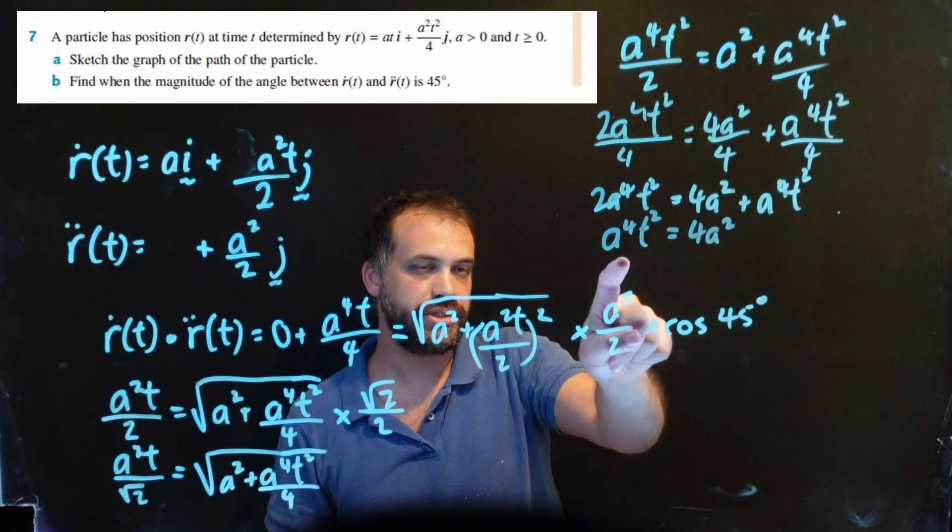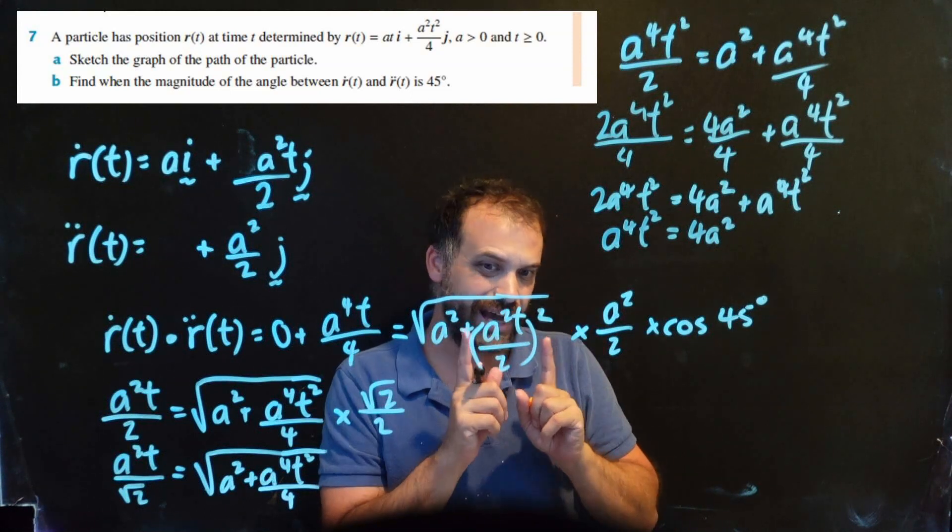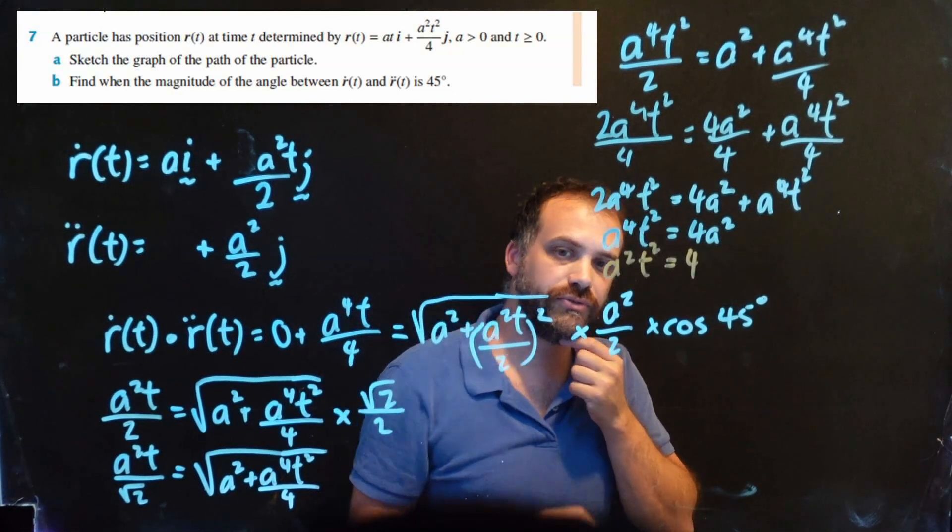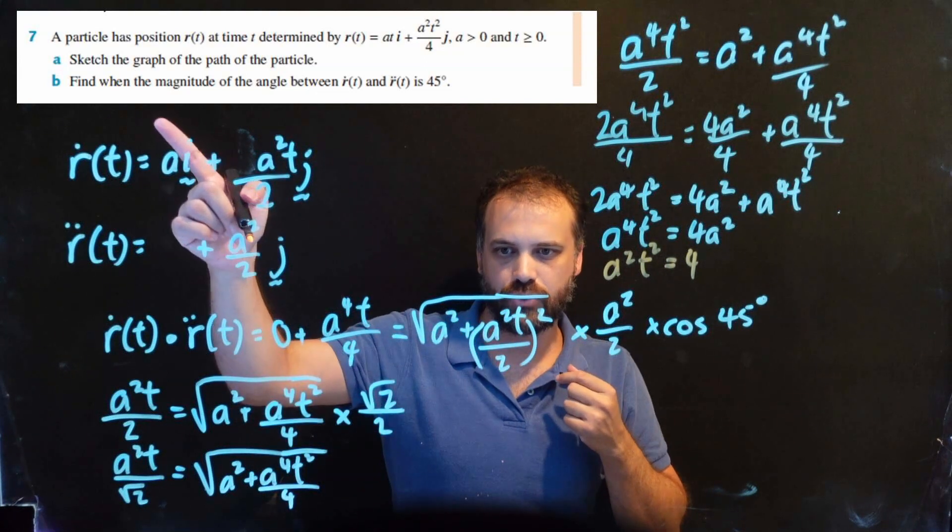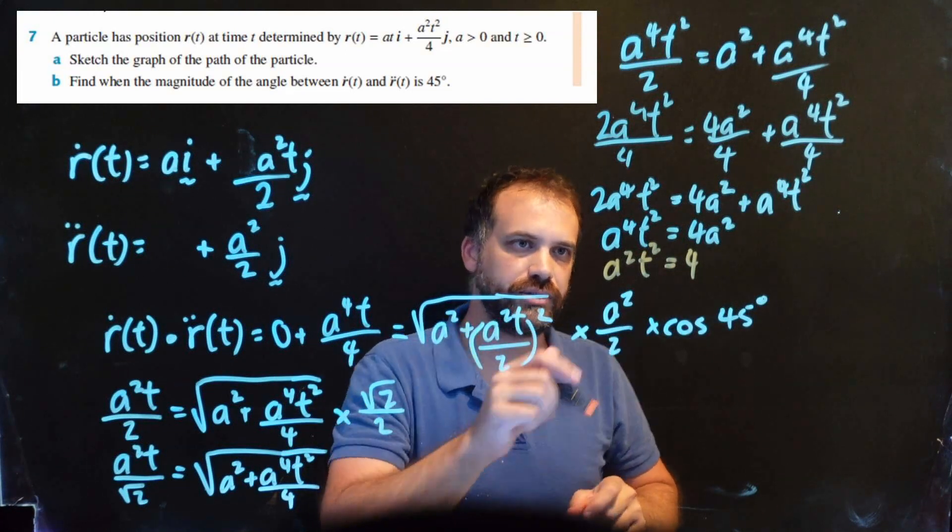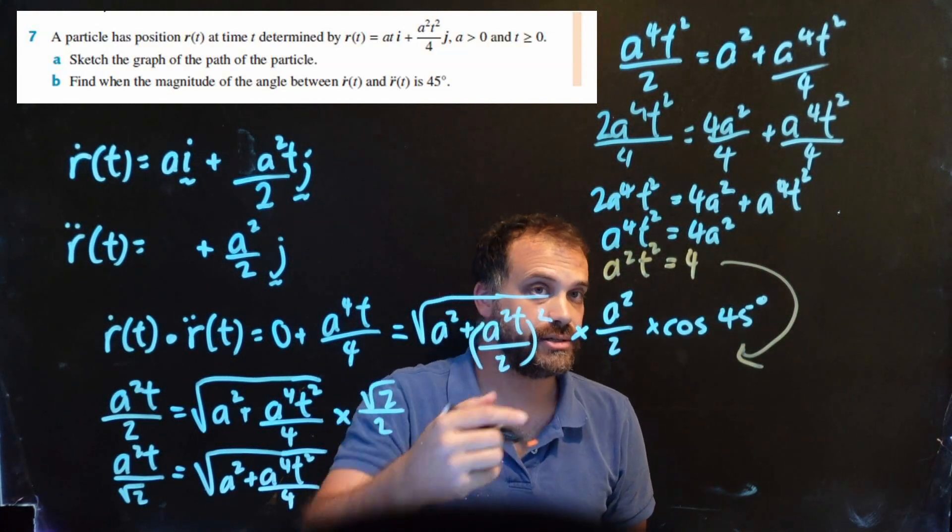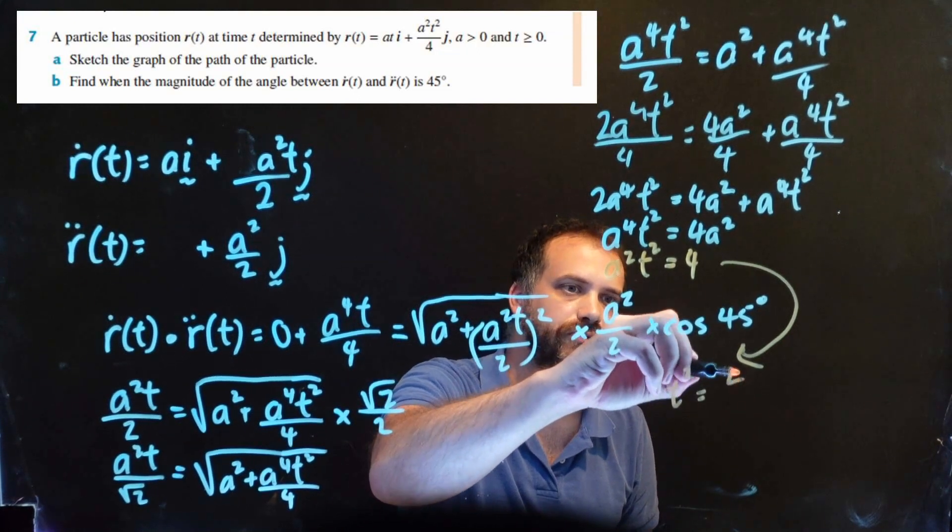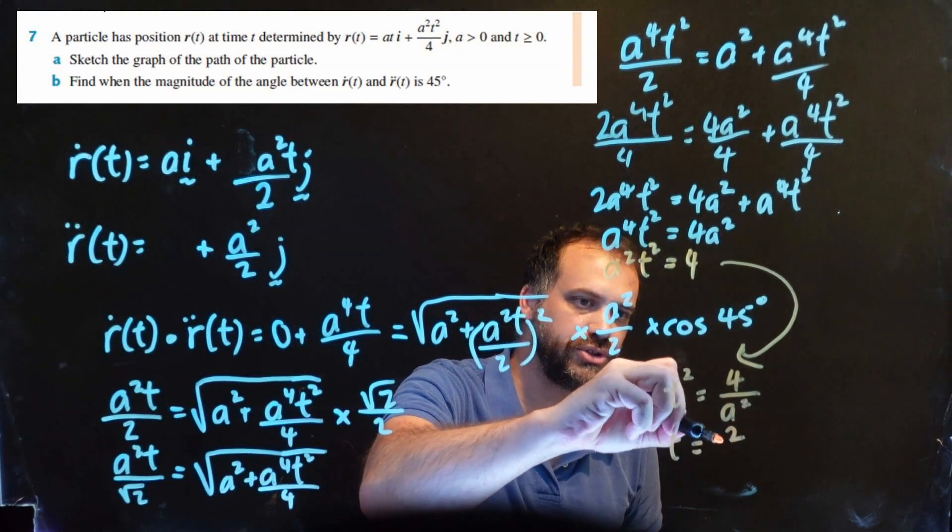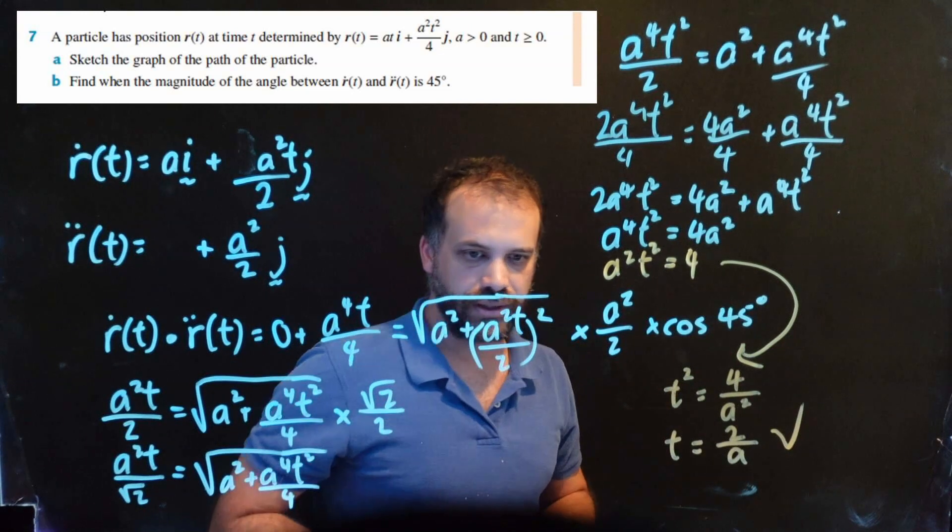This is beautiful. If I divide both sides by a squared, I'll be left with a squared t squared equals 4. And it wants us to find a time when the angle is 45. So taking this equation, I can start isolating t. So I can say t squared is equal to 4 on a squared. And then I can square root both sides and say that t is equal to 2 on a. And that is my answer.